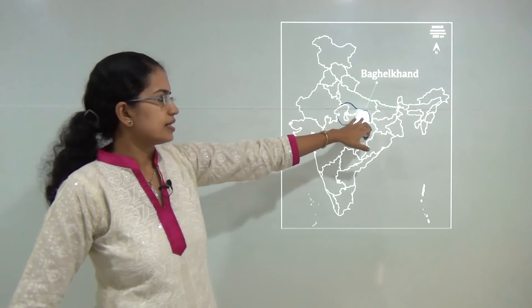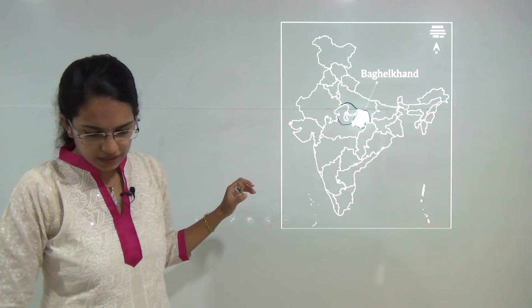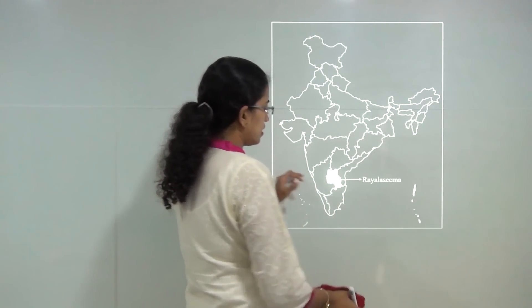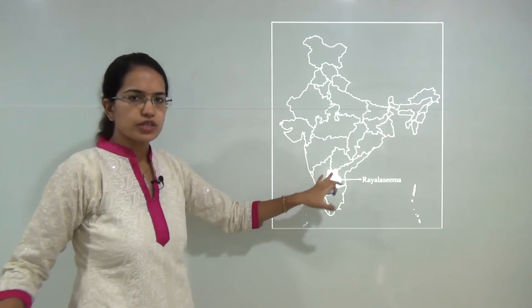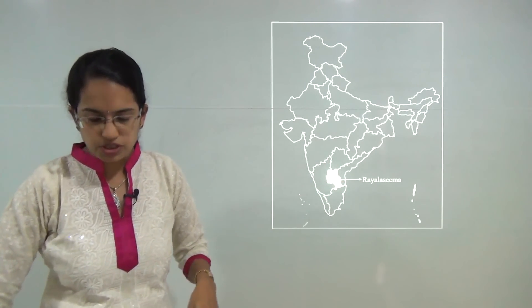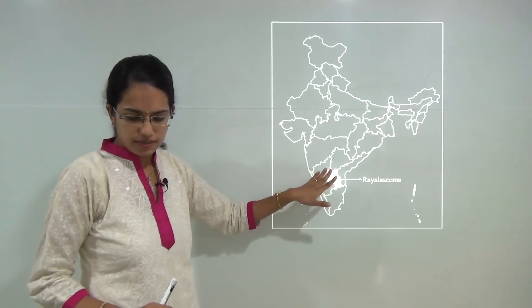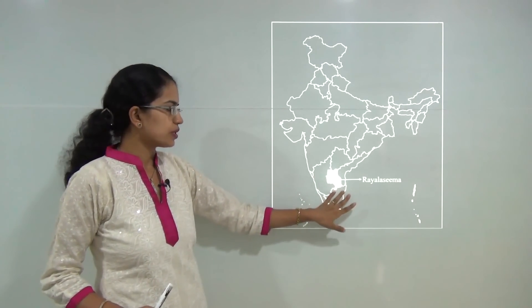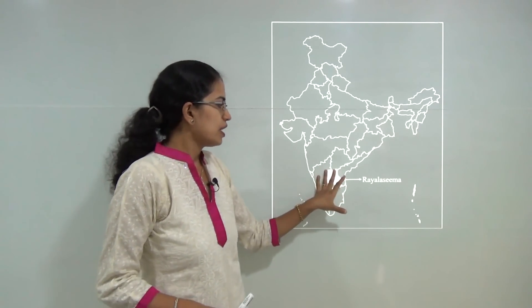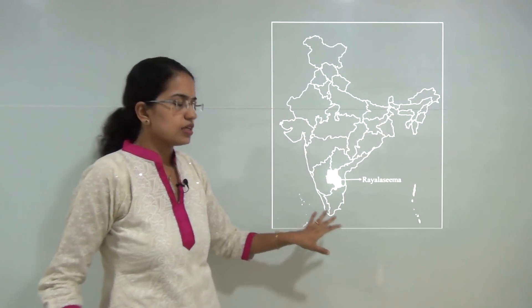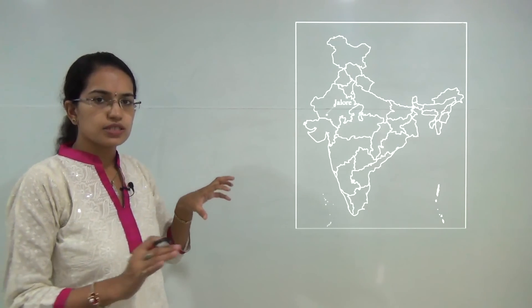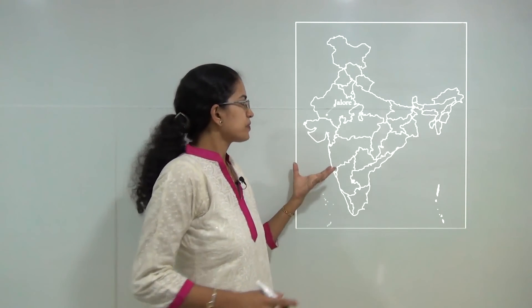Next is Rayalaseema. Rayalaseema is a region which forms with four districts of Andhra Pradesh. The four districts are Anantapur, Chittoor, Kadapa, and Kurnool. These four districts together make the Rayalaseema region. This region is mainly drought prone but is very rich in minerals. These are a few famous map locations that you must know from the conventional point of view.